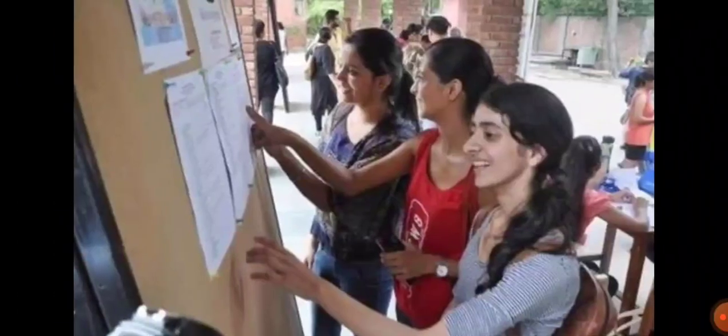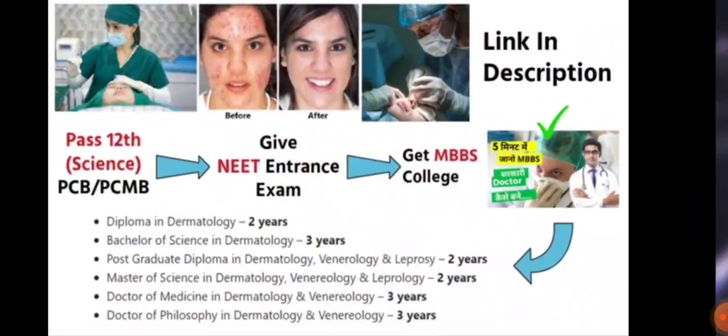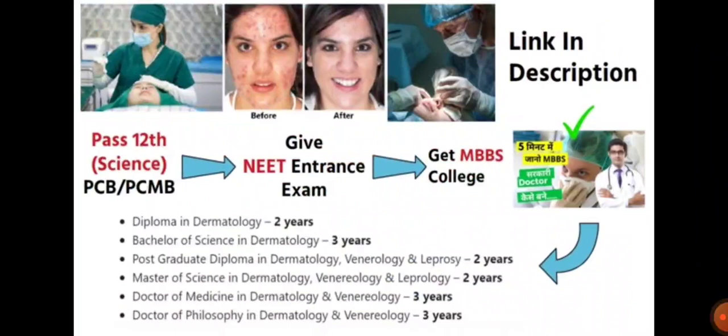Regarding course and fee, this is a bit higher compared to other courses. After 12th, you write the NEET entrance exam and get admitted into MBBS, which is a 5-year course. Course durations are: Diploma in Dermatology — 2 years; Bachelor of Science in Dermatology — 3 years; Postgraduate Diploma in Dermatology, Venereology and Leprosy — 2 years; Master of Science in Dermatology, Venereology and Leprosy — 2 years; Doctor of Medicine in Dermatology and Venereology — 3 years; Doctor of Philosophy in Dermatology and Venereology — 3 years.